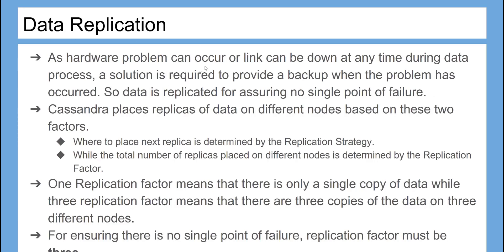As hardware problems can occur or links can be down at any time during data processing, a solution is required to provide a backup when a problem has occurred. So data is replicated to assure no single point of failure. Cassandra places replicas of data on different nodes based on two factors: where to place the next replica, determined by the replication strategy, and the total number of replicas, determined by the replication factor.